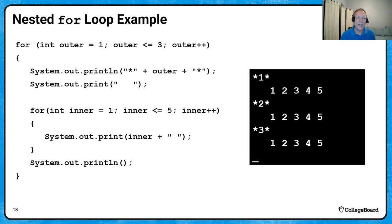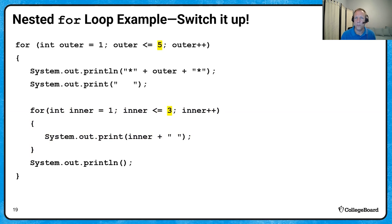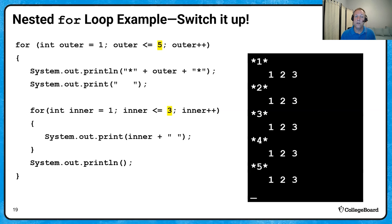What if I switch the numbers — making the outer loop go to 5 and the inner loop go to 3? Same print statements, but now it prints outer 1 then 1, 2, 3; outer 2 then 1, 2, 3; and so on up to outer 5. If you think of them in terms of rows and columns, the first example had 3 rows and 5 columns, and this example has 5 rows and 3 columns.